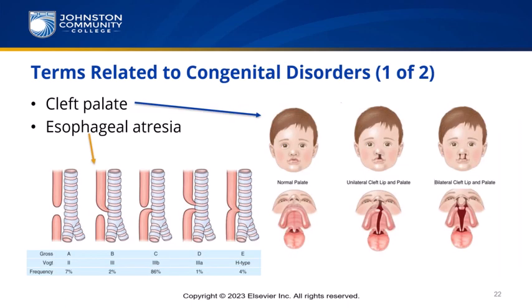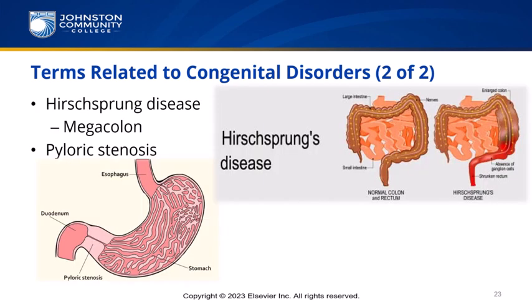Terms related to congenital disorders: A cleft palate is a failure of the roof of the mouth to close during embryonic development, resulting in an opening in the roof of the mouth. Esophageal atresia — a- means without — is a condition where the esophagus ends in a blind pouch and lacks an opening to the stomach. Hirschsprung's disease is a congenital absence of normal nervous function in part of the colon, resulting in absence of peristaltic movement, accumulation of feces, and an enlarged colon — also called congenital megacolon, mega meaning large. Pyloric stenosis is a narrowing of the pyloric sphincter muscle that prevents partially digested food from passing into the duodenum.